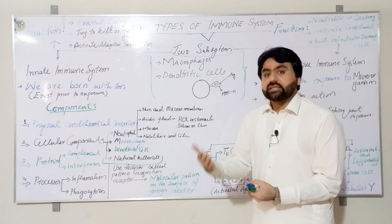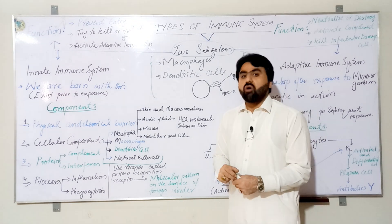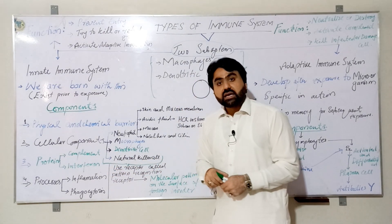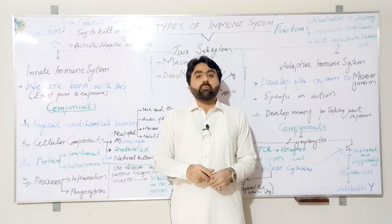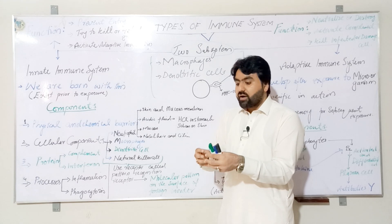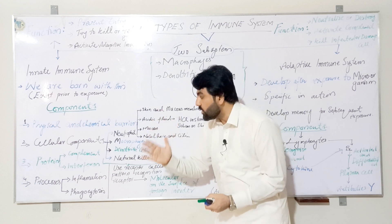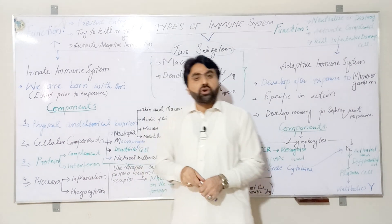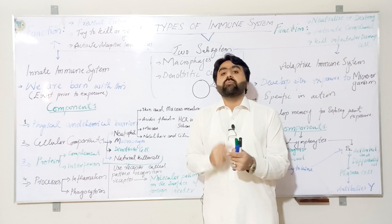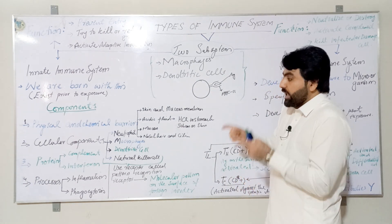When they recognize a foreign invader as non-self, these cells get activated. After activation, they activate proteins present in the serum of the human body. Among these proteins, two are very important: complement proteins, which are a series of different proteins that further augment the attack of the immune system and help kill the foreign invader; and interferons, which are secreted by activated cells to interfere with the multiplication of microorganisms, particularly viruses.